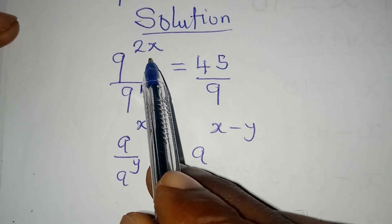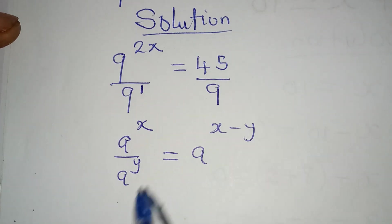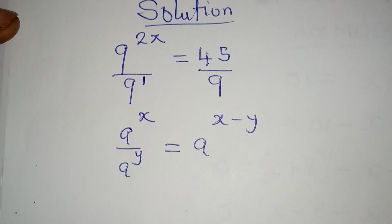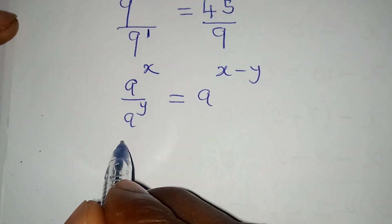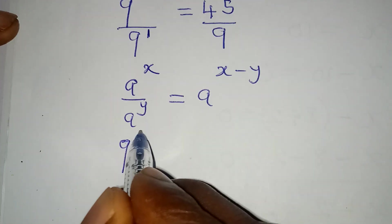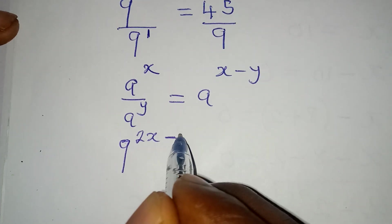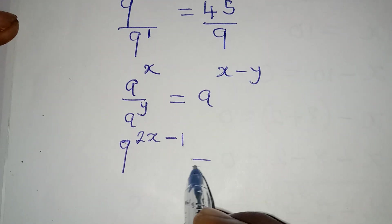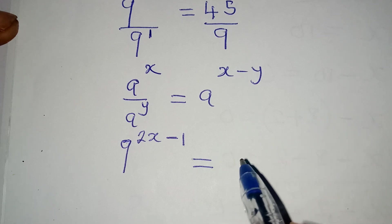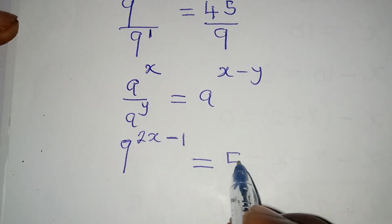And because of this, I will have here 9 to the power of 2x minus 1. So we're going to have 9 to the power of 2x minus 1, and this will be equal to 45 over 9, which will give us 5.